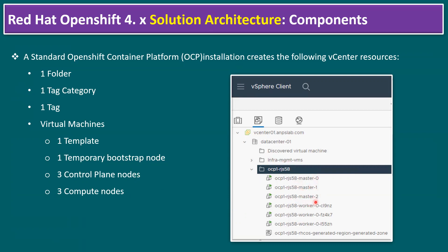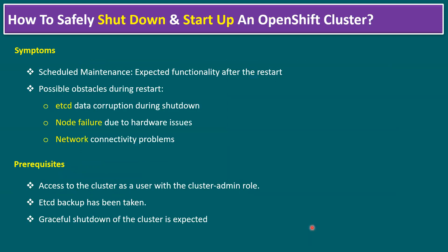Within our vSphere platform we have three worker nodes and three master nodes. For all six nodes, if you want to plan for a restart, there is a reboot sequence we should follow when planning any scheduled maintenance activity. If we miss the reboot sequence, there will be uninterrupted issues, or we may face network connectivity issues once the master/control plane and worker nodes come back up.